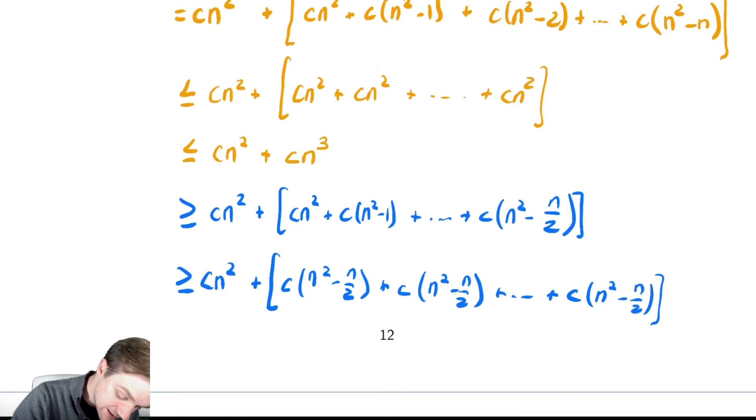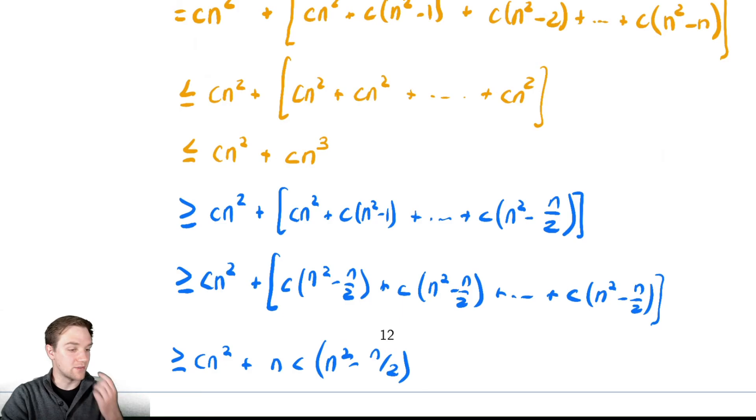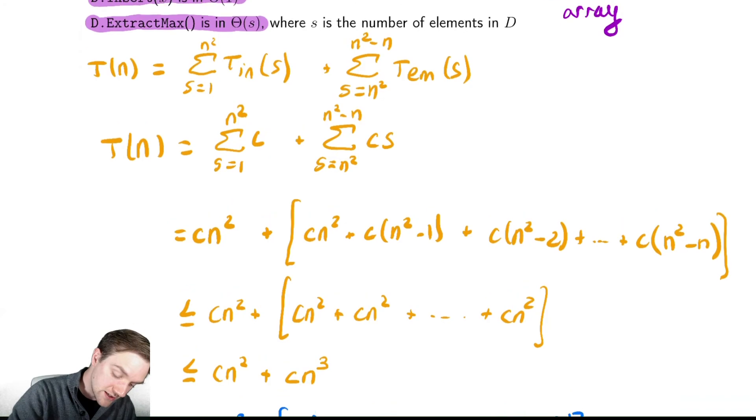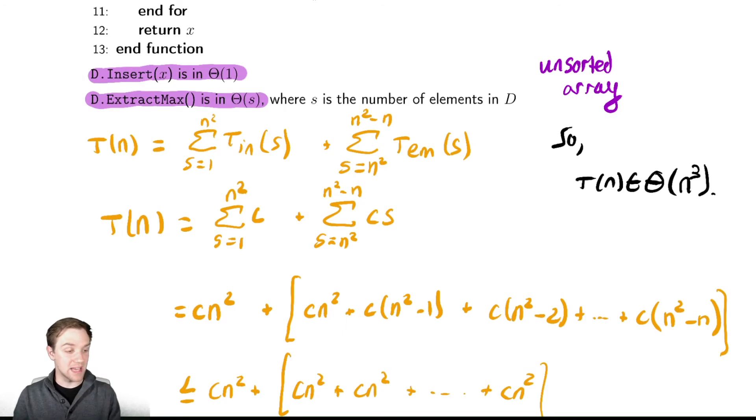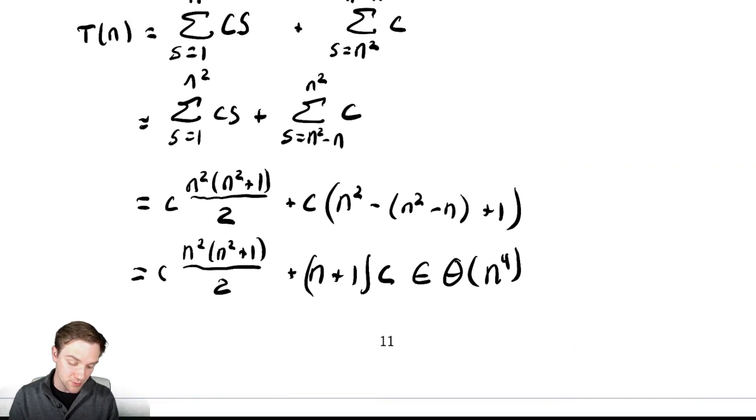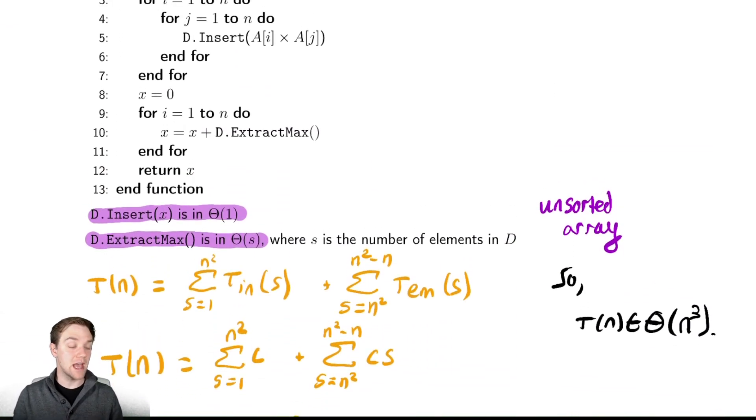And lastly, there are n terms there, so this is c n squared plus n times c times n squared minus n over 2. And maybe at this point we can finally identify that this is also in big omega of n cubed, so the entire original algorithm would be in theta of n cubed. Notice, this is more efficient than our other implementation. Our first implementation took theta of n to the fourth time. This one takes theta of n cubed time. So we added some efficiency.